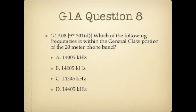Question 8. Which of the following frequencies is within the general class portion of the 20 meter phone band? A. 1,855 kilohertz. Or D. 14,405 kilohertz.